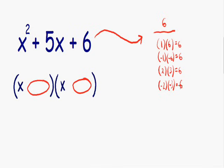All these numbers multiply and give us positive 6, but we also need to find the numbers that add or subtract to give us positive 5. If you take a look at this third set of numbers, the 2 and the 3, 2 plus 3 equals positive 5. These two numbers multiply and give us positive 6, but also add to give us positive 5.